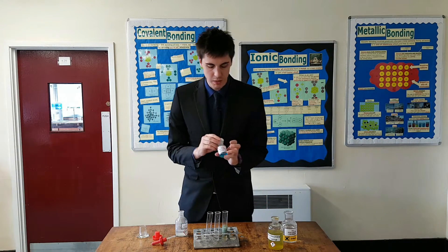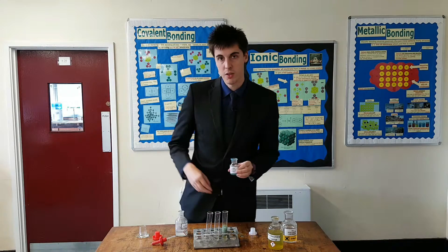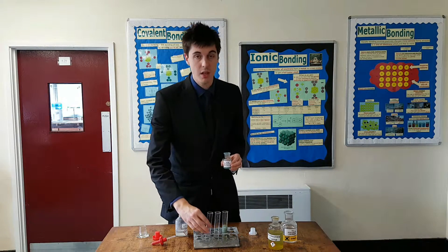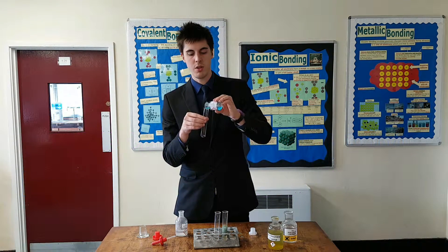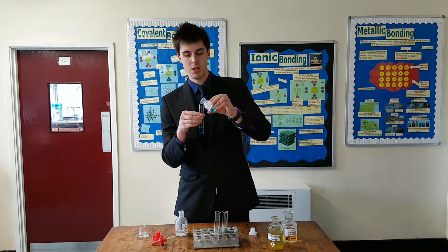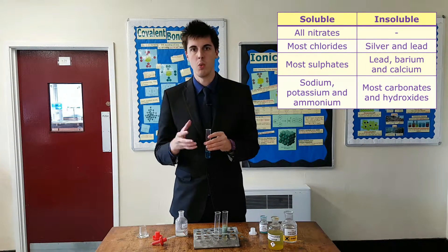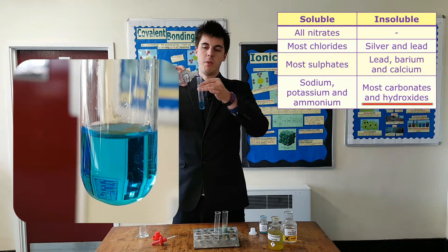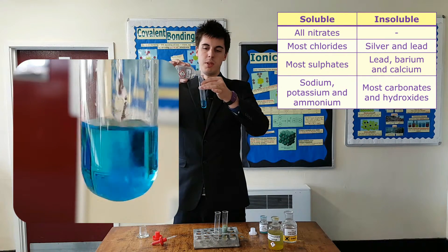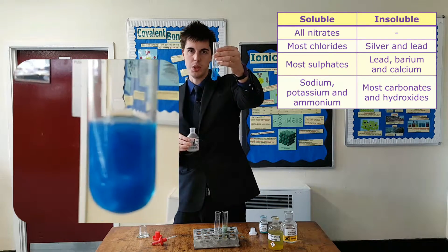Final one, I'm going to have a look at copper sulfate. So copper sulfate and sodium hydroxide is going to give me copper hydroxide and sodium sulfate. Sodium sulfate we've already said is going to be soluble. Copper hydroxide, however, is one of the ones that is insoluble. Therefore we should get a precipitate. And as you can see, we do.